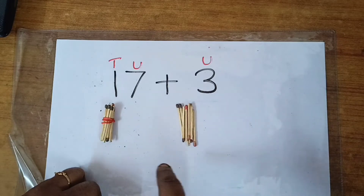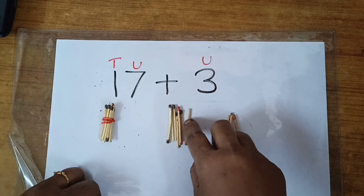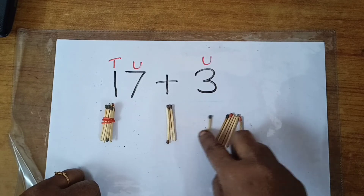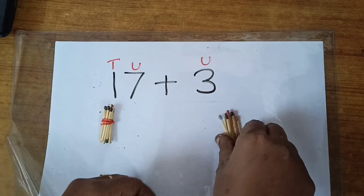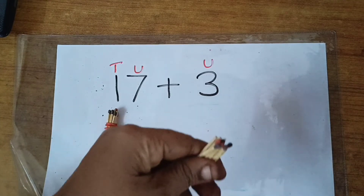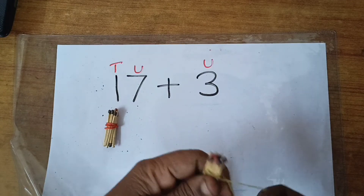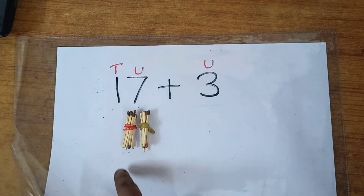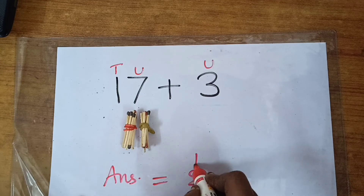Let us count: 1, 2, 3, 4, 5, 6, 7, 8, 9, 10. Now, 10 units will make 1 ten. So let us tie them together with a rubber band. Now, tens and tens will go together and our answer is 2 tens.